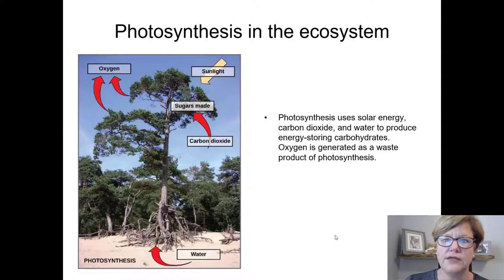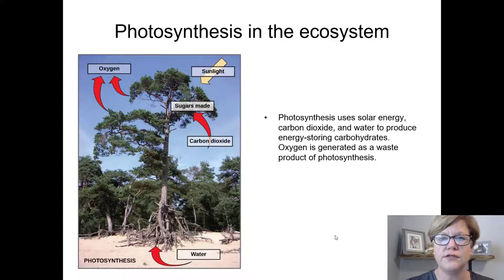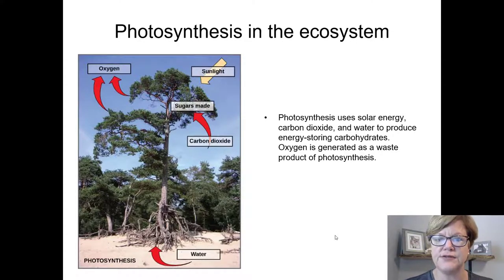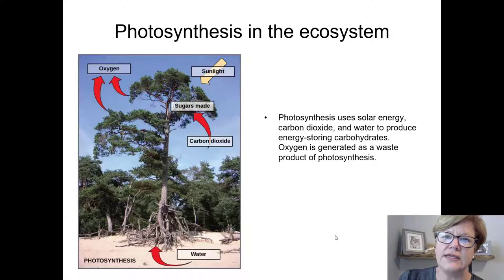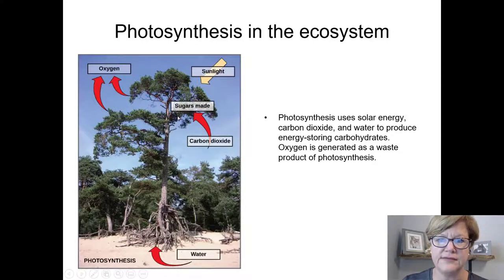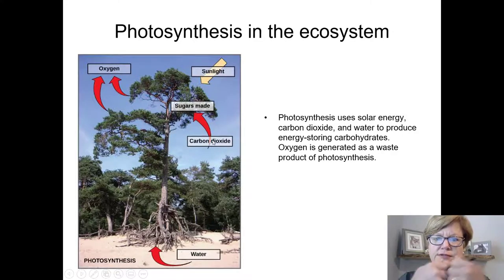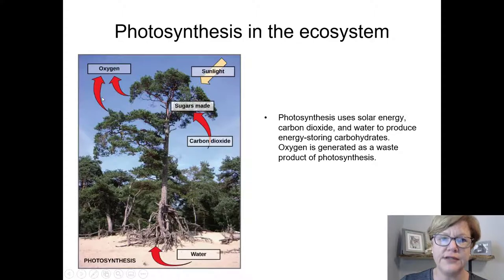In the ecosystem, sunlight comes in as the main form of energy. It first goes to the producers, which are the photosynthetic organisms — plants. There are also some photosynthetic bacteria, protists, and algae. The energy from sunlight is transferred into the bonds of glucose, made from carbon dioxide. Oxygen is released as a waste product, and water is required as a reactant.